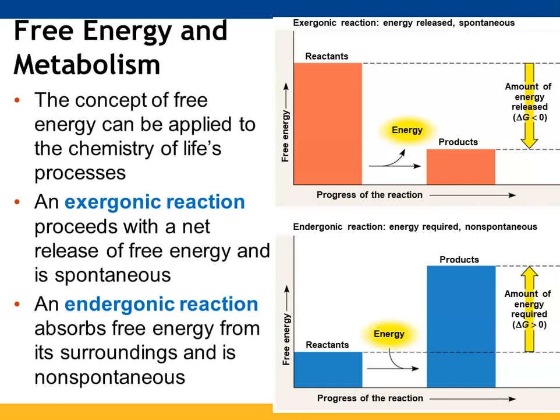How does this apply to metabolic pathways? In an exergonic reaction — similar to exothermic from chemistry — you have less free energy in your products than in your reactants because some energy was released; those are your spontaneous reactions. In an endergonic reaction, the reactants have to take in energy from their surroundings because the products have more free energy than the reactants did to begin with — those are your non-spontaneous reactions.